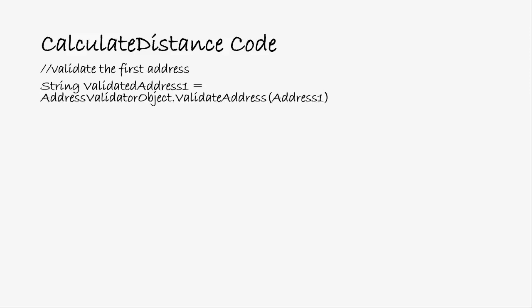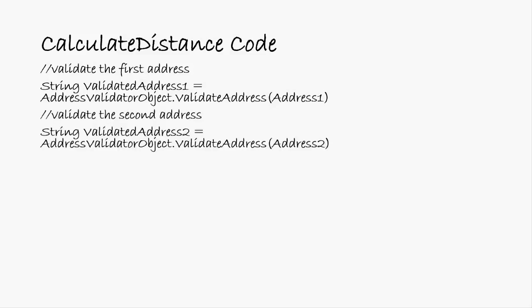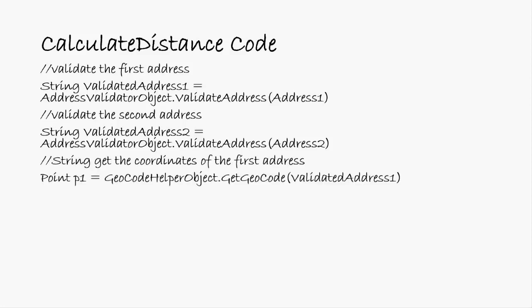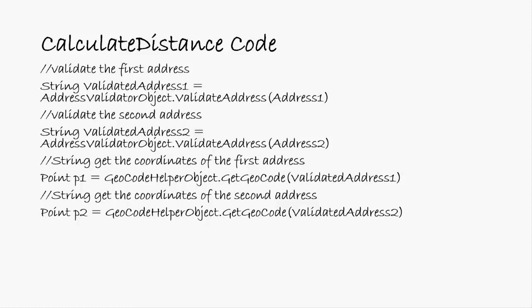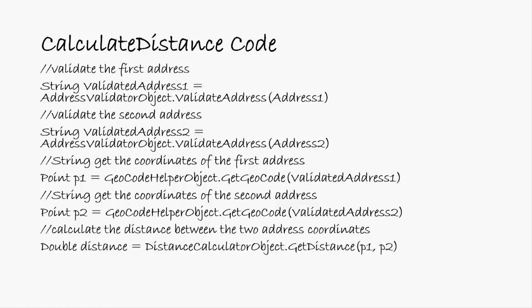First, the client class has to create an AddressValidator object and pass the first address. Assuming it's valid, it has to do the same thing for the second address. Once it gets the two validated addresses with the right format, it has to get the coordinates of the first address by calling the GeocodeHelper object, and the same for the second address. Finally, it has to call the DistanceCalculator object and pass the points — the latitude and longitudes associated with both addresses — and returns the distance. As you can see, the interface to the Geographical Services Library is complicated and requires interactions with three different classes.